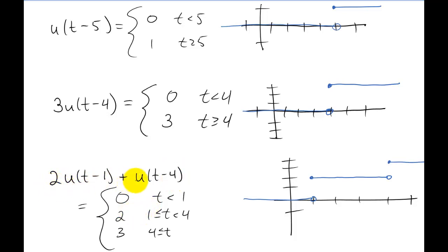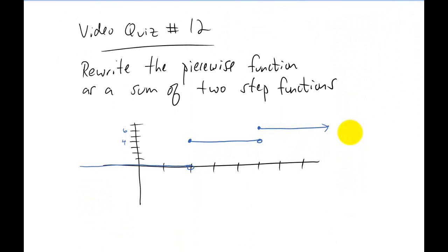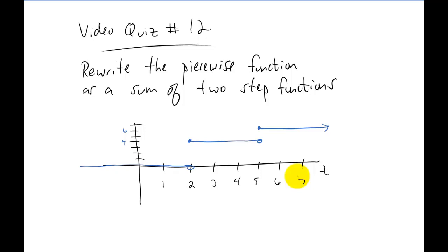Hit pause and consider: how would you take this piecewise function and rewrite it as a sum of step functions? That's exactly what I want you to do for video quiz number twelve. I've drawn out a piecewise function — try to write it as a sum of two step functions. The function has a value of four on one piece and six on the next, with zero before it. Good luck with that and I'll see you in class.